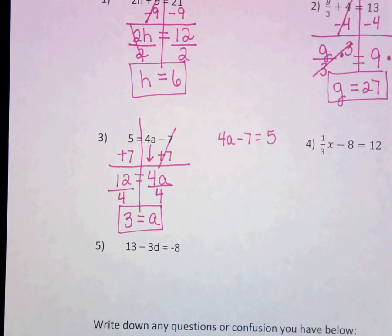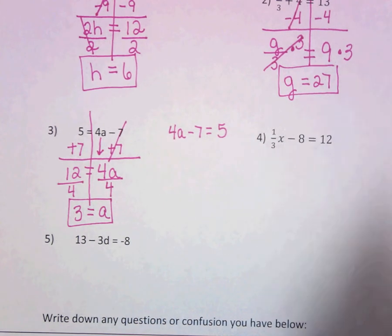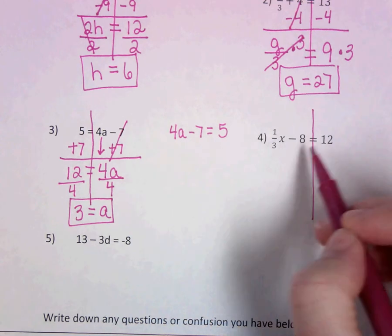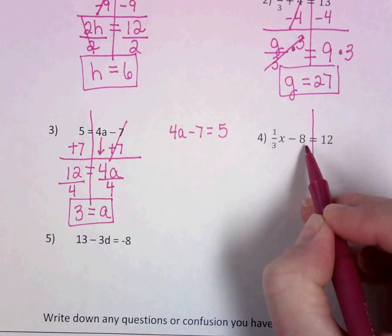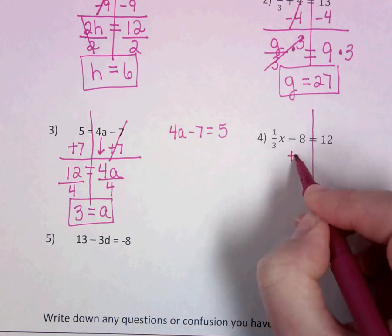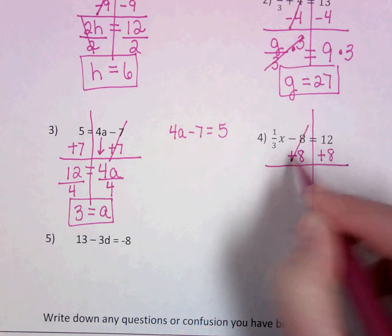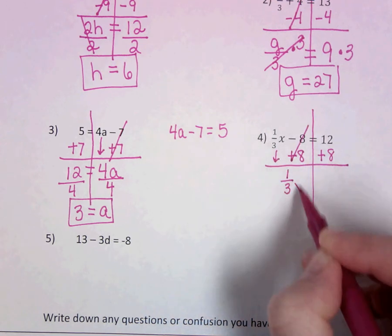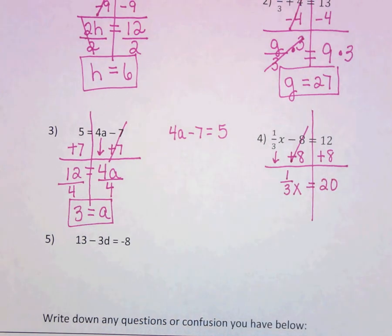Okay, don't leave me yet. Even if you think you've got this, because these next two are a little bit different. Again, we want to cancel out the 8. This is minus 8. So we're going to add 8. And that's going to leave me 1 third X equals 20.